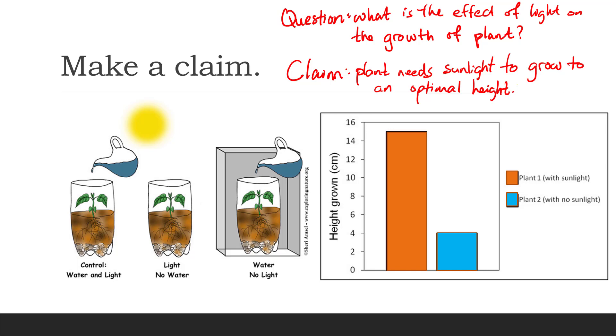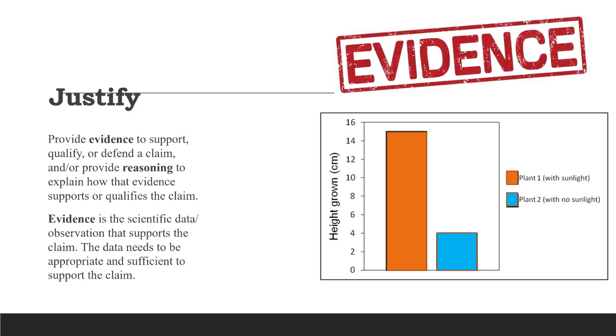Therefore, a normal extension to the task verb, make a claim, would be to justify the claim based on evidence and or reasoning. Justify means to provide evidence to support, qualify or defend a claim, or to provide reasoning to explain how the evidence supports or qualifies the claim. Evidence is the data or observation gathered in the experiment that supports the claim. So, a way to justify our claim that plants need sunlight to grow to an optimal height, is to state that when plants were given sunlight, it grows taller by about 10cm, as compared to plants with no sunlight.